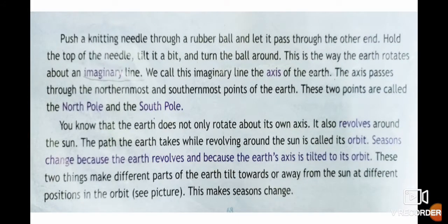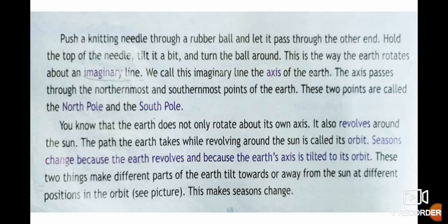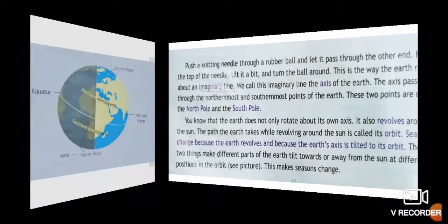Push a knitting needle through a rubber ball and let it pass through the other end. Hold the top of the needle, tilt it a bit, and turn the ball around. This is the way the earth rotates — rotates means moves — about an imaginary line. We call this imaginary line the axis of the earth. The axis passes through the northernmost and southernmost point of the earth. These two points are called the north pole and the south pole.